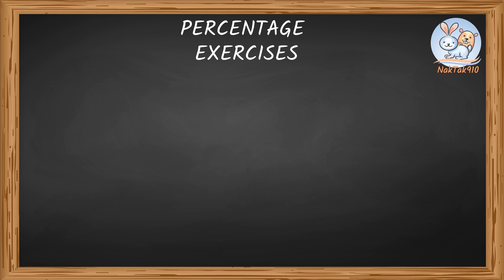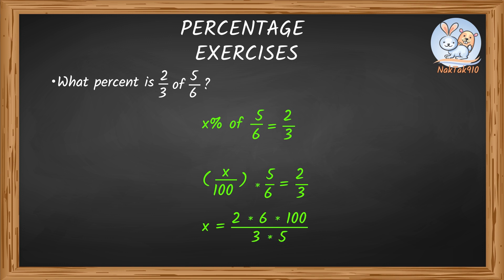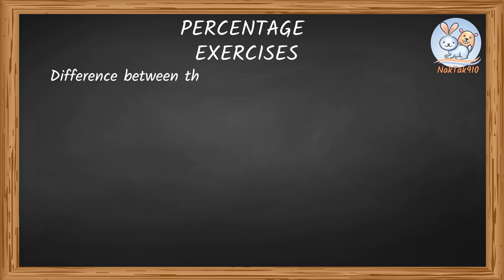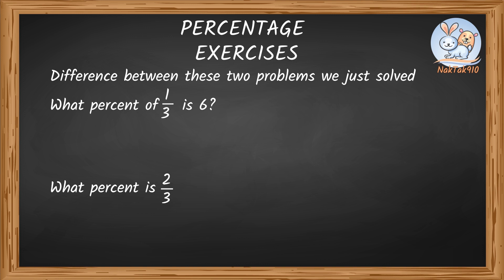Let's move to the next one. What percent is 2 thirds of 5 by 6? Let's write the unknown value in terms of x percent. x percent of 5 by 6 equals 2 by 3. x divided by 100 times 5 by 6 equals 2 by 3. x equals 2 times 6 times 100 divided by 3 times 5. x equals 400 by 5, which equals 80%. Tack, did you notice the difference between these two problems we just solved?